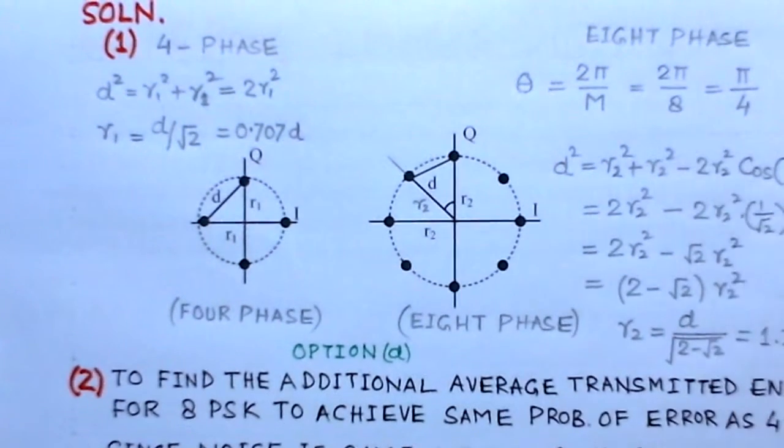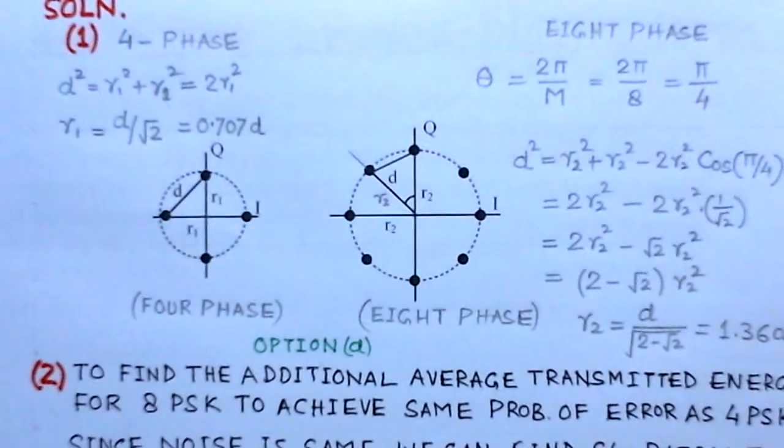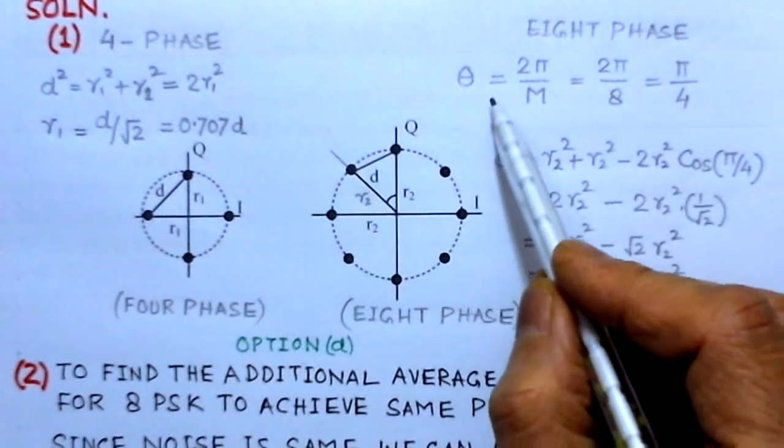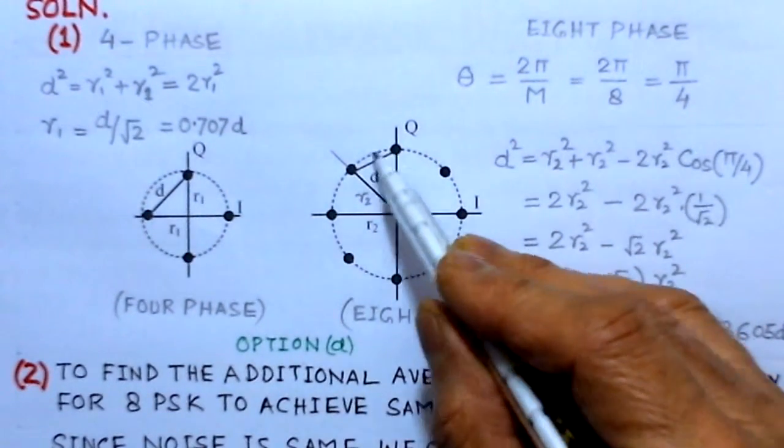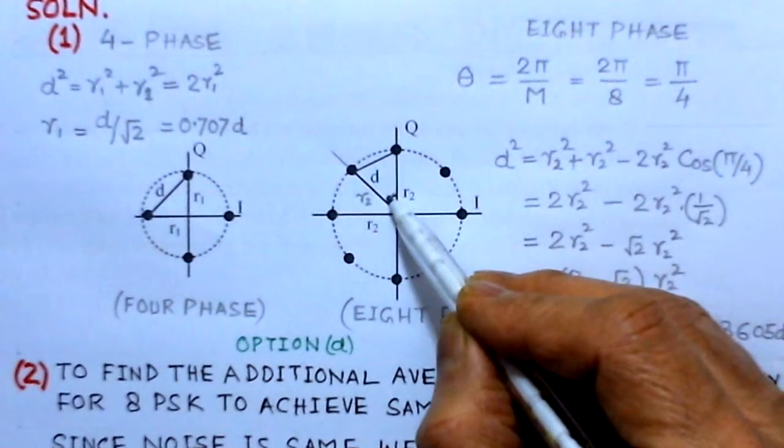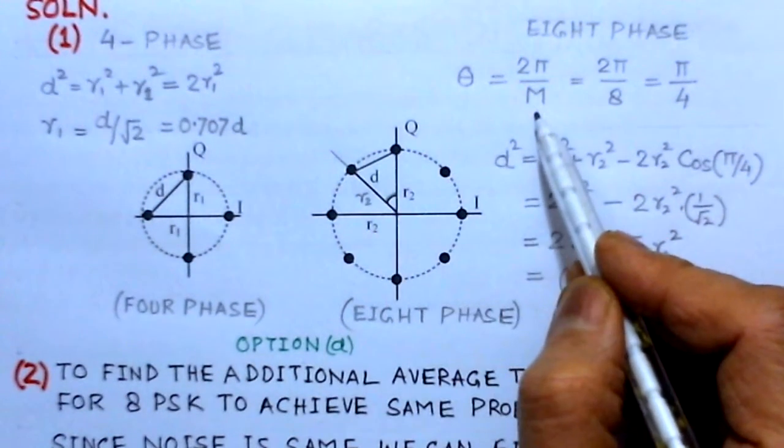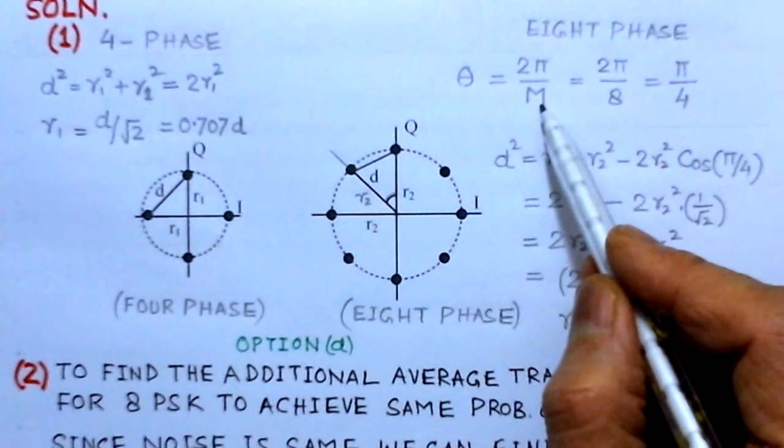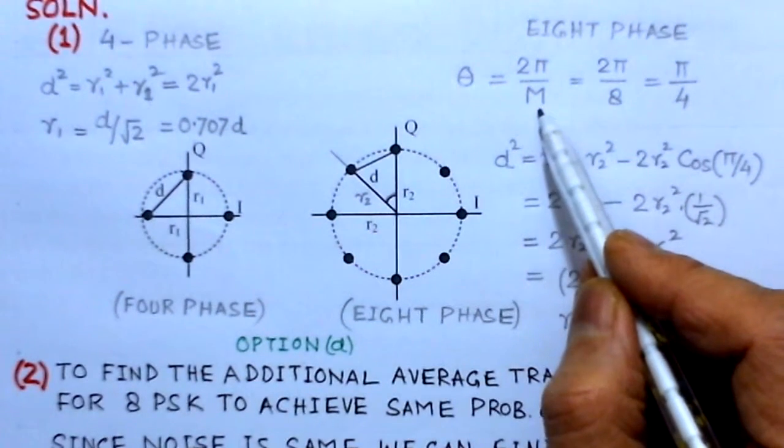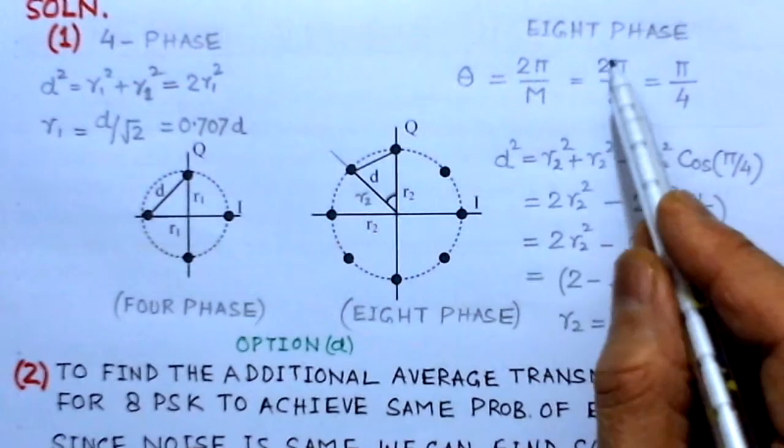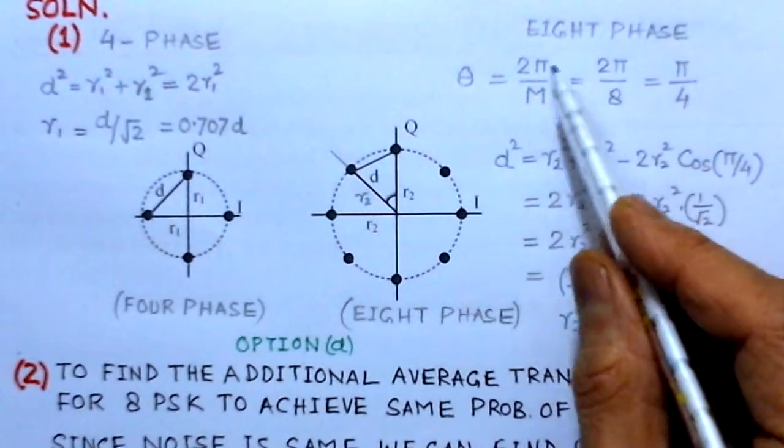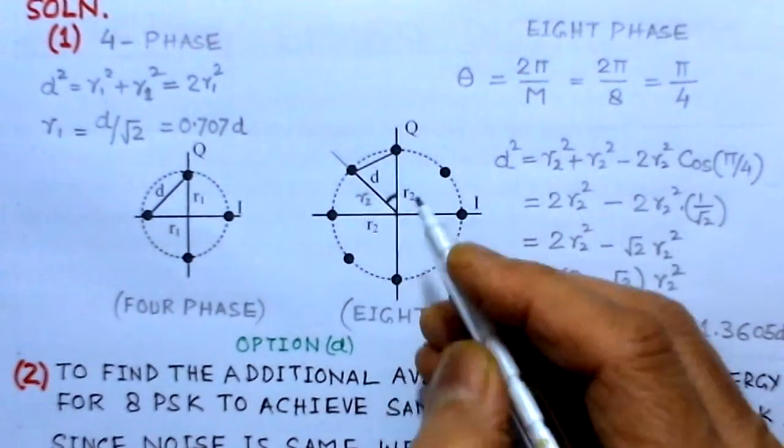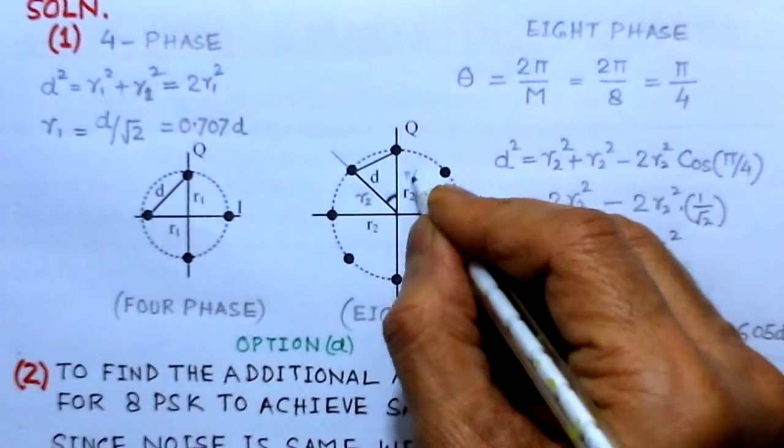This is the 8-phase constellation. For this, we have to find the value of theta. The value of theta is given by 2 pi by m, where m is decided by what array system it is. This is 8-phase signal, so this is 2 pi over 8, which is pi over 4. So this angle here is pi by 4.